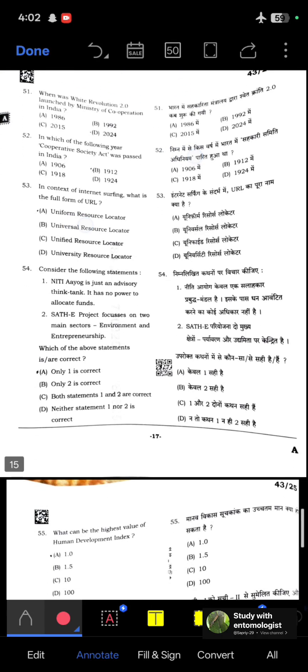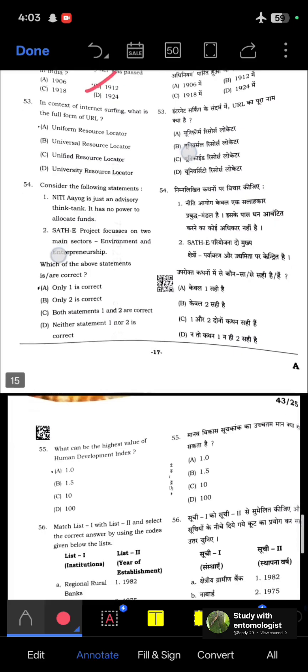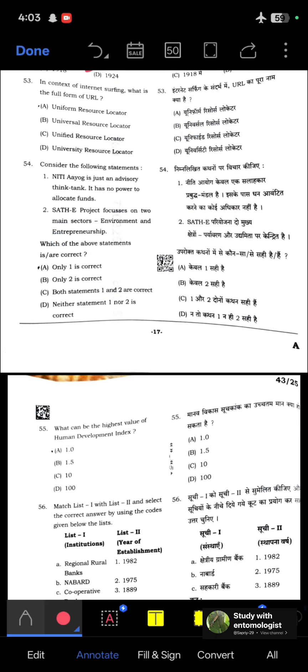When was White Revolution 2.0 launched by Ministry of Cooperation in India? Recently, in 2024. In which year was the Cooperative Society Act passed in India? 1912. In context of internet surfing, what is the full form of URL? Uniform Resource Locator.